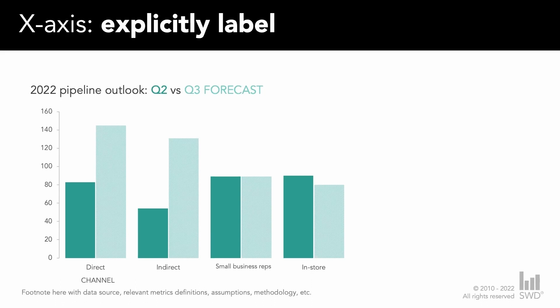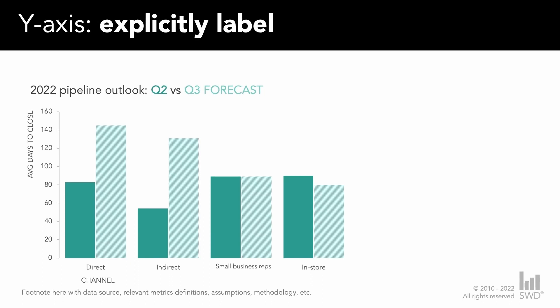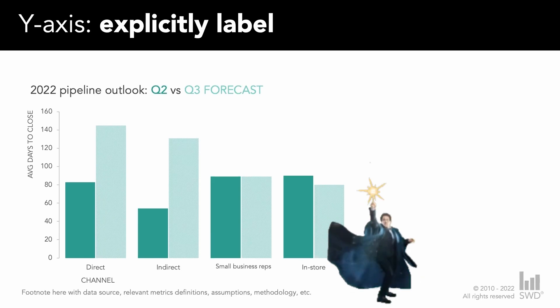Let's now improve our y-axis and not make our audience guess what metric this is. We know there's some sort of a pipeline, but is it sales? Is it number of deals? Open opportunities? What it turns out is it's actually the average number of days it takes to close a deal. So let's label that explicitly. Notice what an improvement we've already made with just some very simple changes — don't leave it up to your audience to guess. Always make sure your chart titles are labeled, your axes are labeled, and you have a footnote as relevant to the data.